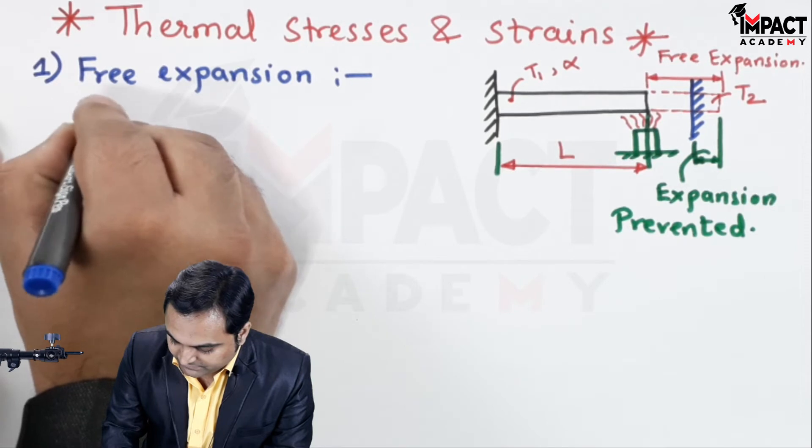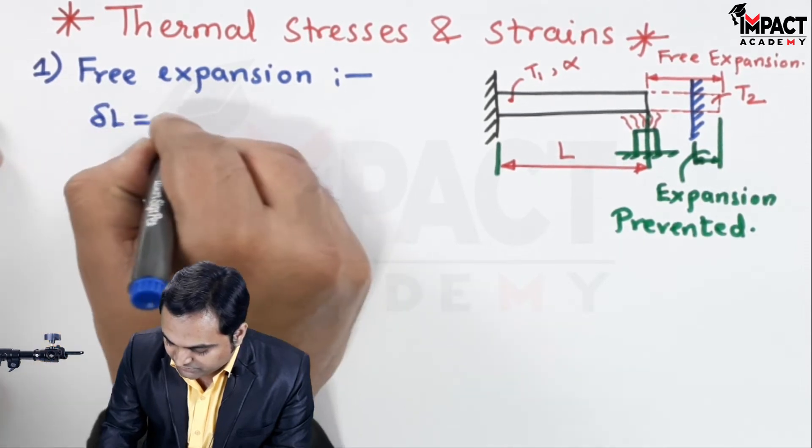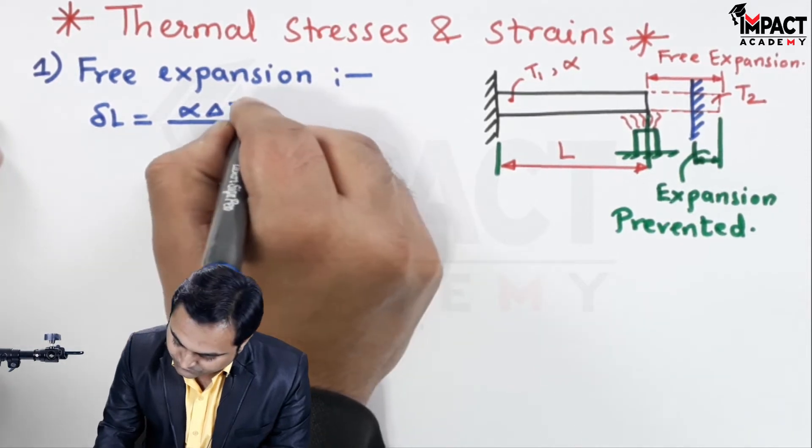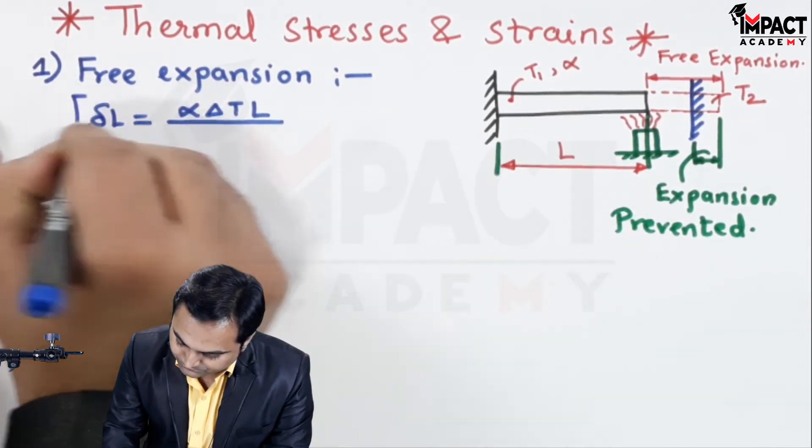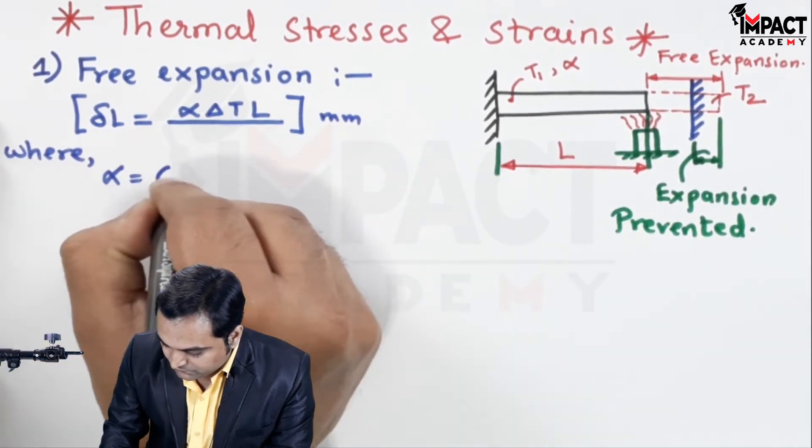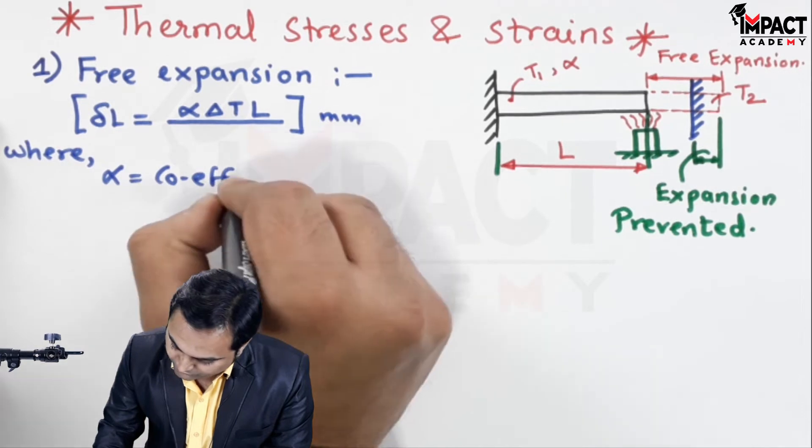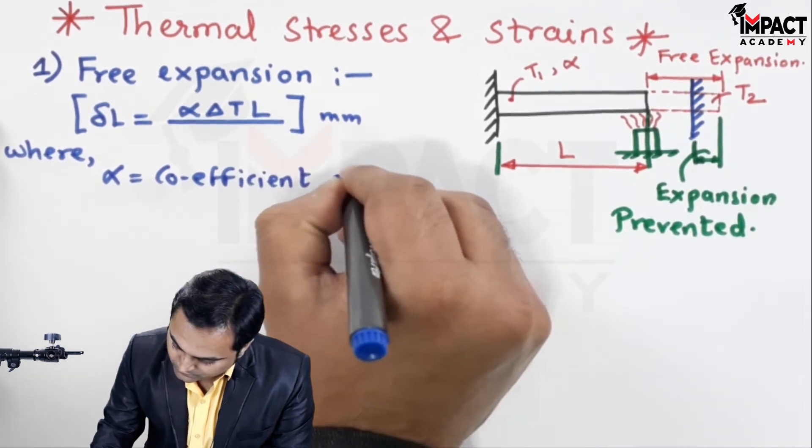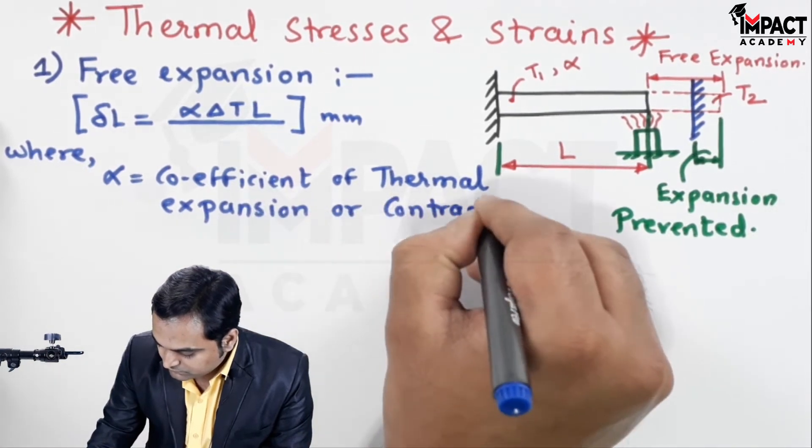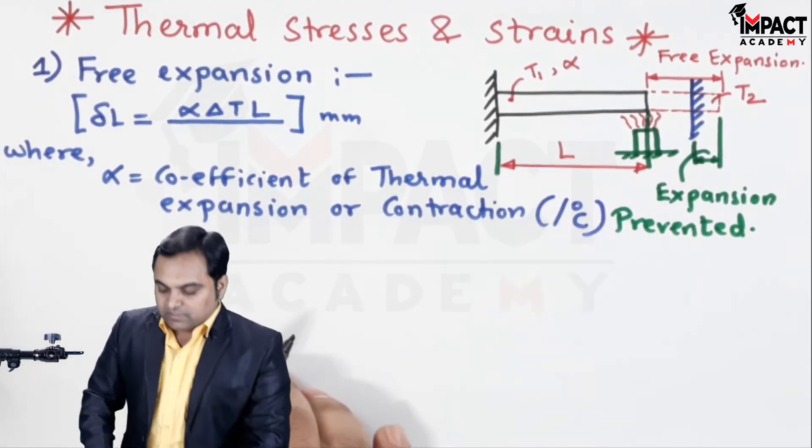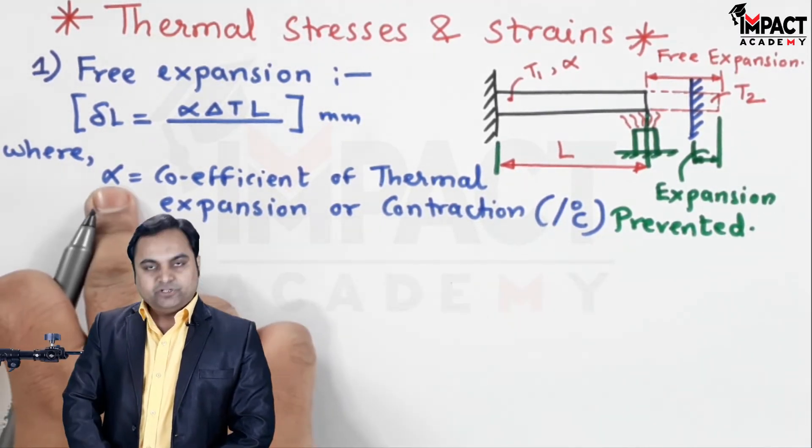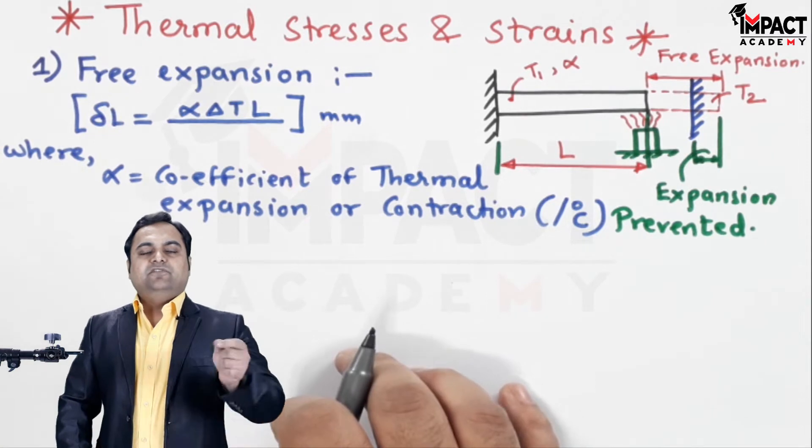It is denoted by Delta L, also called as the deflection, that is given by alpha into Delta T into L. Unit is mm, where alpha is the coefficient of thermal expansion or thermal contraction.